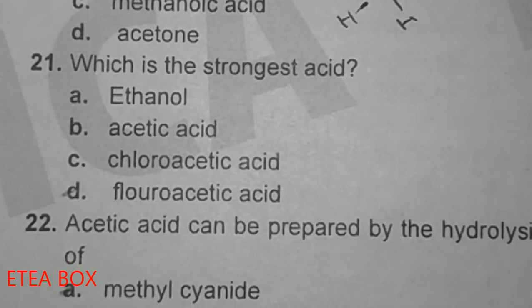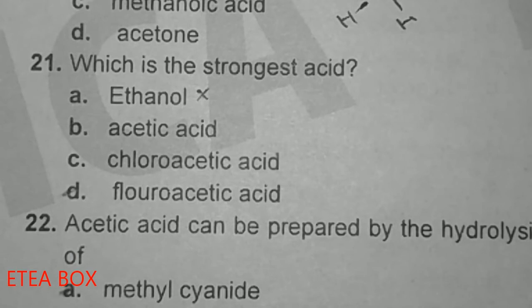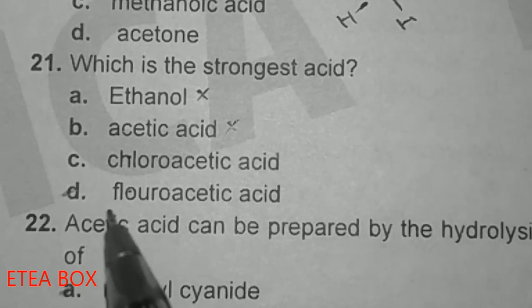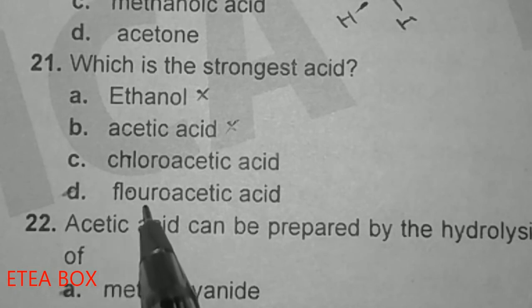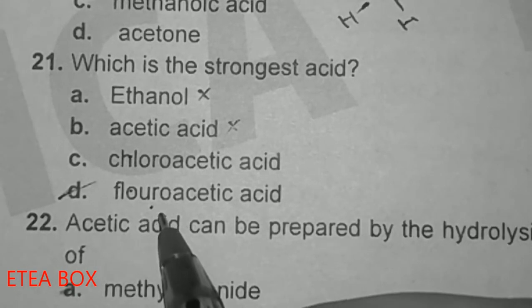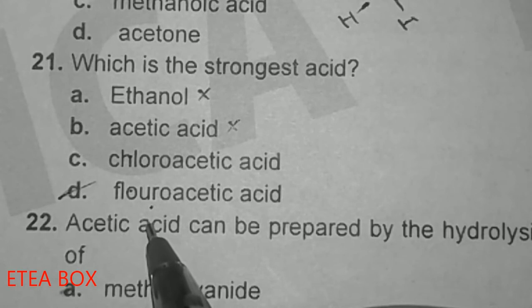Which one is the strongest acid? Carboxylic acid is stronger than alcohol, so that option is incorrect. Greater the electron-withdrawing group, stronger the acid. The additional point: greater the electronegativity of the electron-withdrawing group, stronger the acid. Option D is correct — fluorine has greater electronegativity than chlorine, so it withdraws electrons more strongly. Option D is correct.